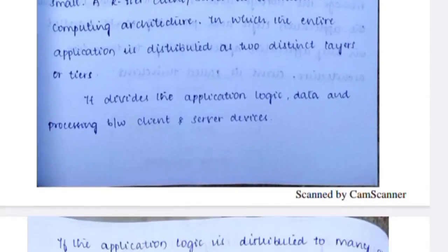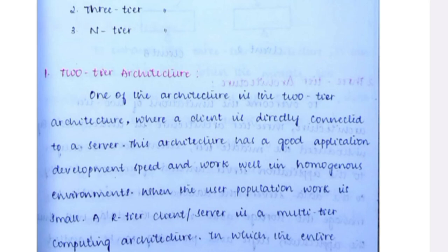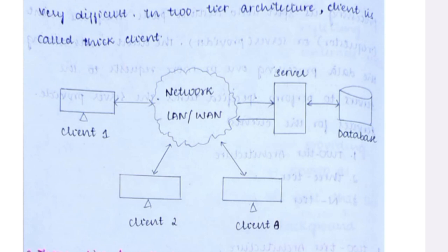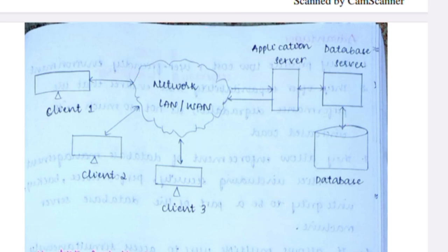In client-server architecture, we have one-tier, two-tier, and n-tier architectures. In one-tier architecture, client one, client two, and client three are all connected via a network (LAN or MAN) to a server and database beyond the network. In two-tier architecture, the database server, application server, and data server are separated beyond the network.